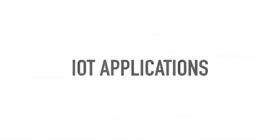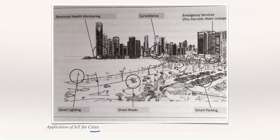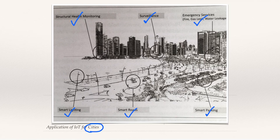Now we go through applications where IoT is suitable. For cities — smart cities — IoT plays a major role in: smart parking, smart roads, smart lighting, structural health monitoring of buildings, surveillance, and emergency services like fire, gas leak, and water leakage protection systems. These come under smart city applications.